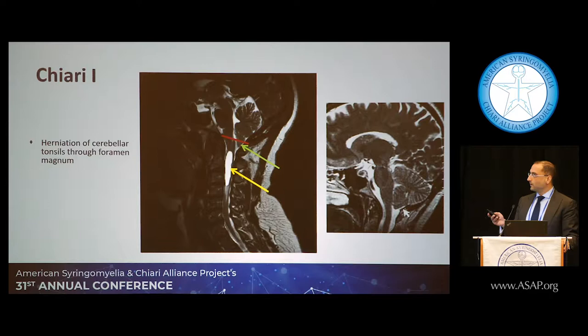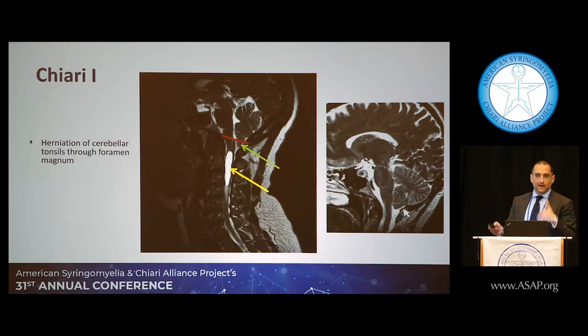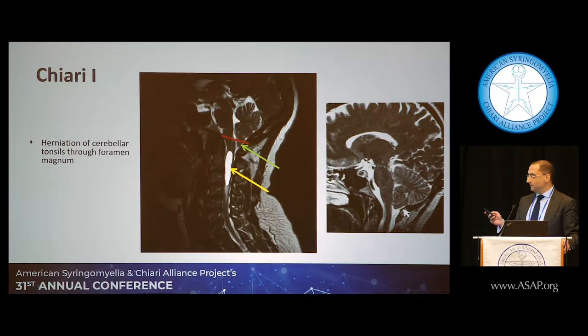Type 1 is the more common type you'll see in adults because it's not really associated with other findings in the neuro-axis. This is where you have a portion of the cerebellum coming down into the foramen magnum. This one also has a syrinx, as mentioned earlier, and about 50% of Chiari malformations have that finding.